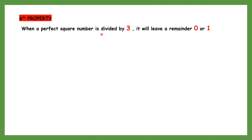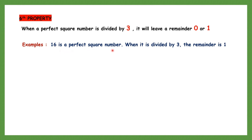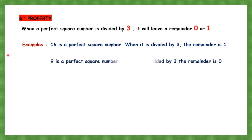The sixth property: when a perfect square number is divided by 3, the remainder will always be 0 or 1. For example, 16 is a perfect square — when you divide 16 by 3, the remainder is 1. Another example: 9 is a perfect square — when you divide 9 by 3, the remainder is 0. So when a perfect square number is divided by 3, it will leave a remainder of 0 or 1. This is the sixth property.